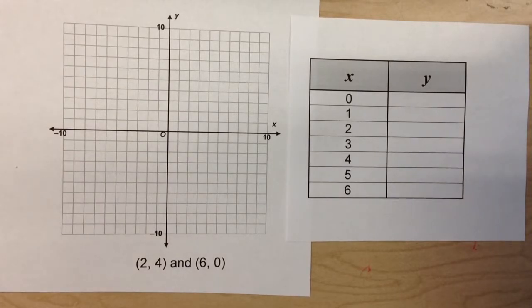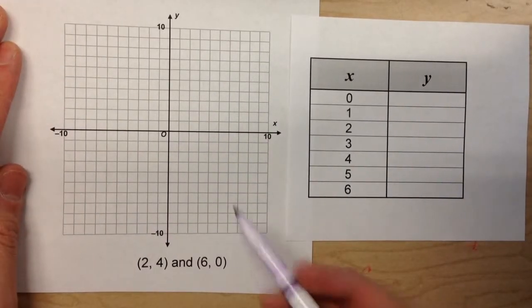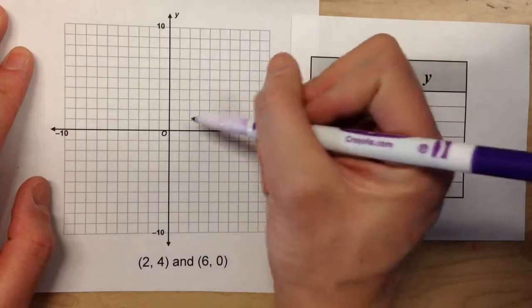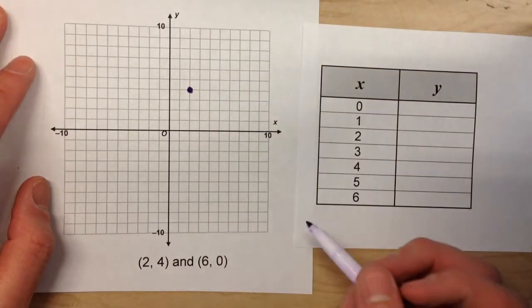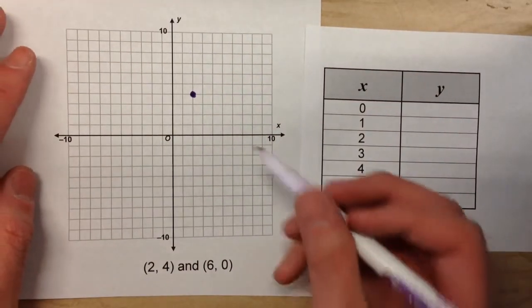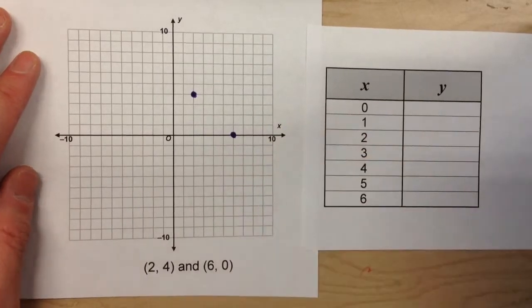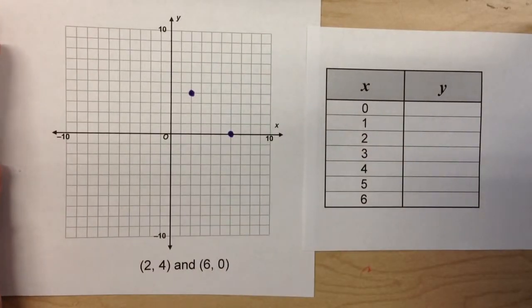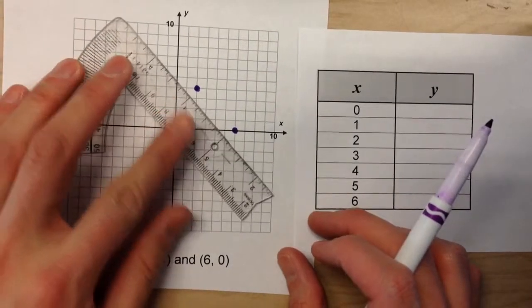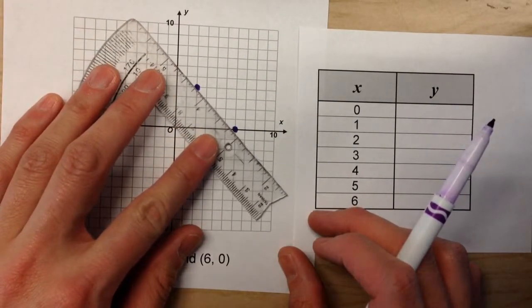We can use a graph to solve this by plotting the point 2, 4 and plotting the point 6, 0. And now that we know those two points, we can determine what the line looks like by using a straight edge and carefully drawing the line in.